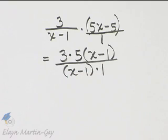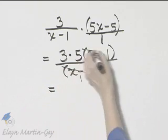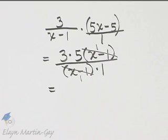I have completely factored. Now I can simplify. Notice there's a common factor of x minus 1 with a common factor of x minus 1.